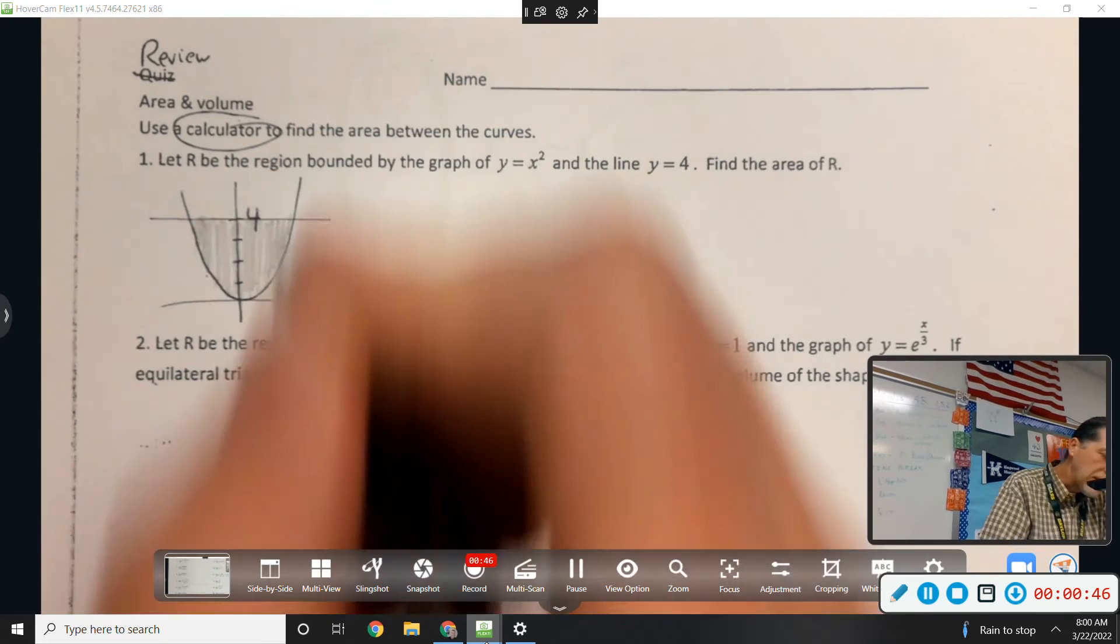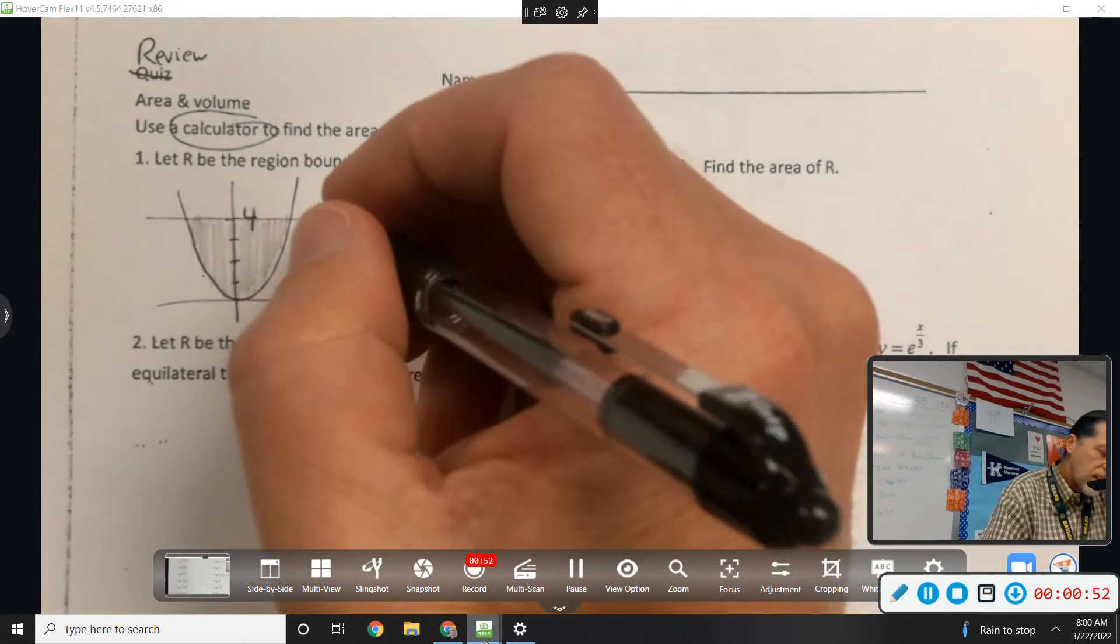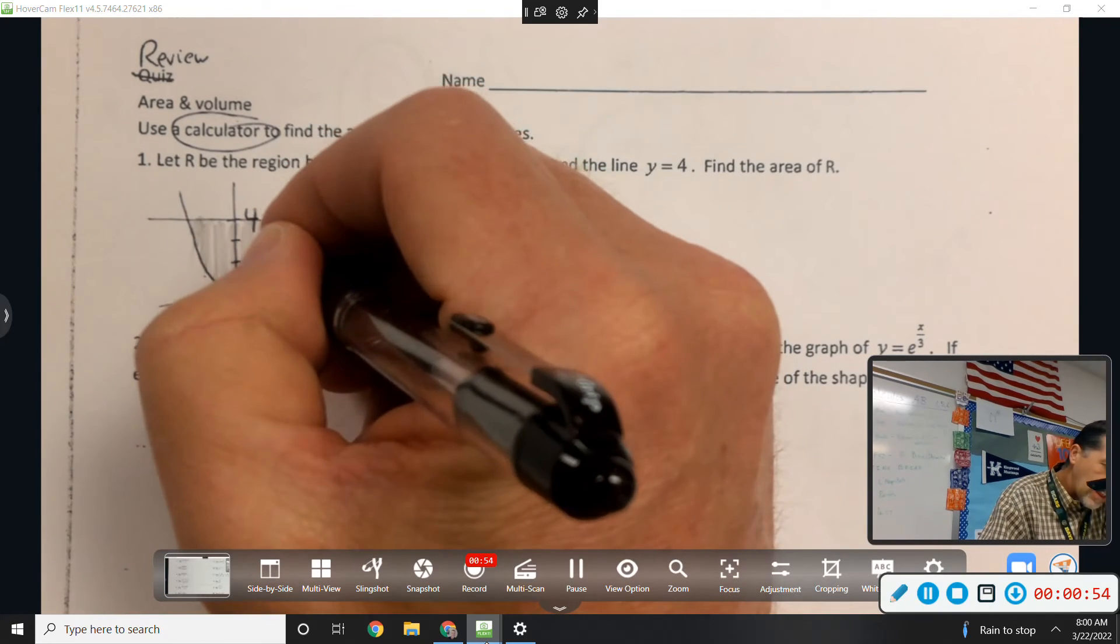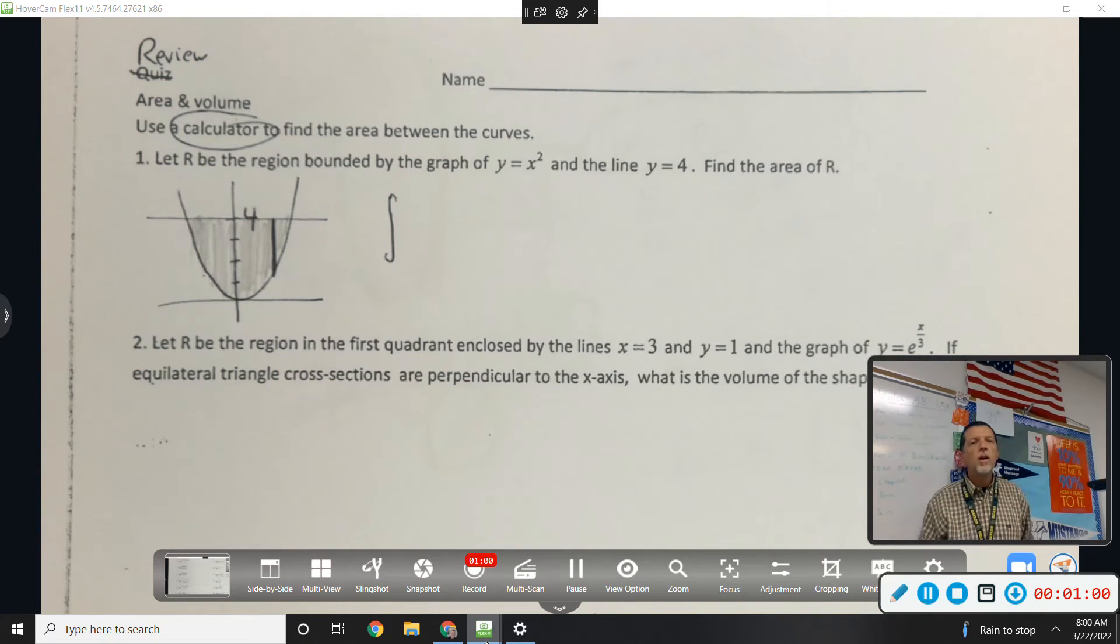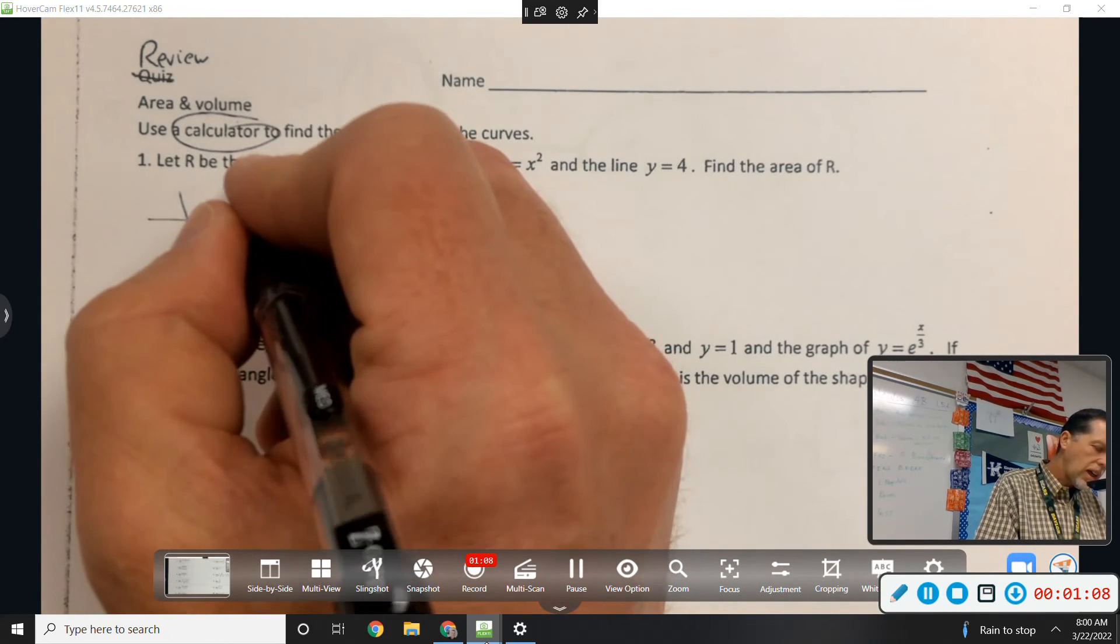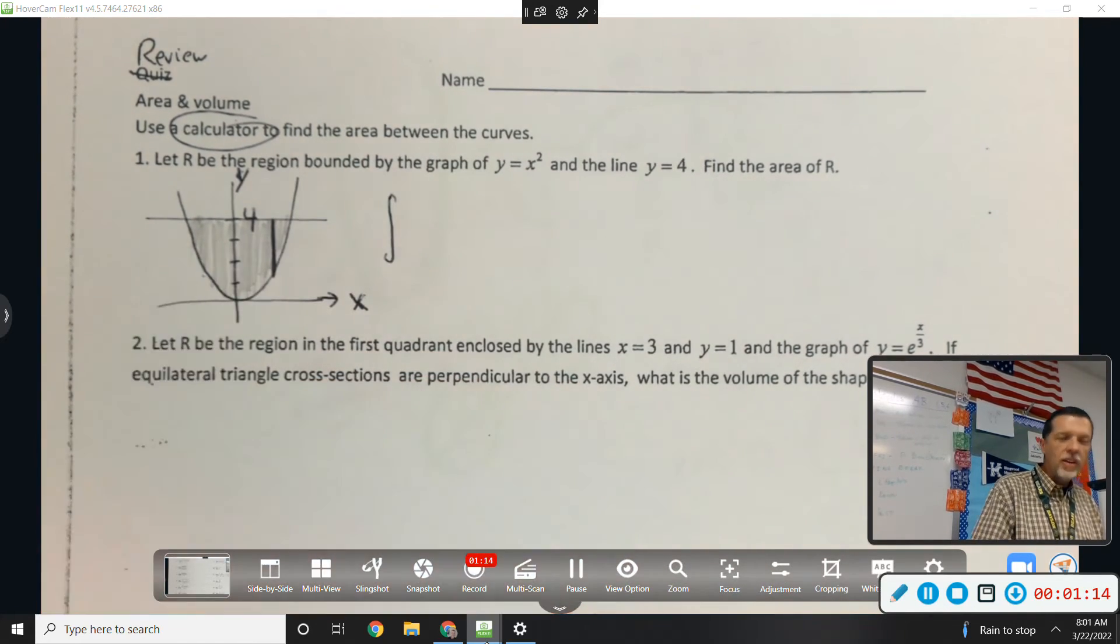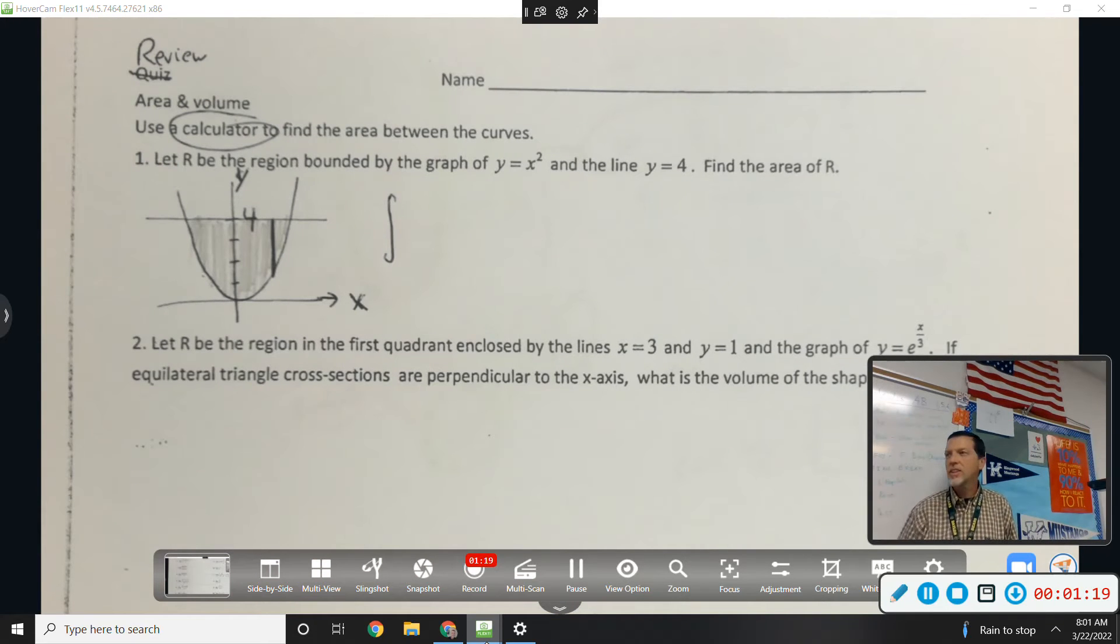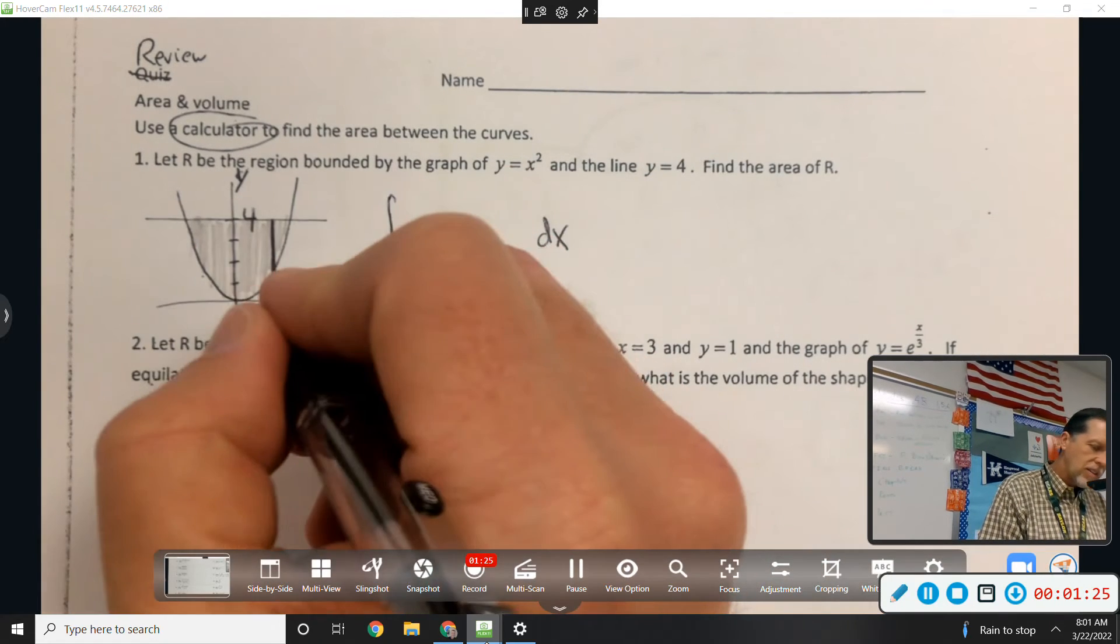So I just want that area. I'm not rotating it, I'm not building cross-sections out of it, I just want that area. So let's see. Is this going to be dx or dy? Are the rectangles stacked in the x direction or in the y direction? Stacked in the x direction. So this is dx.